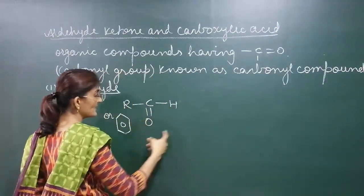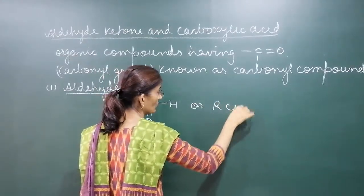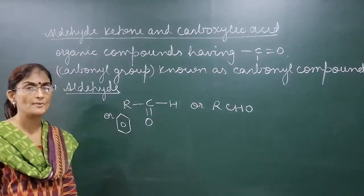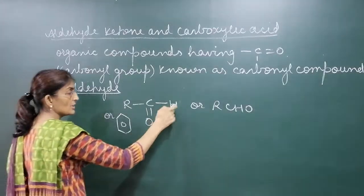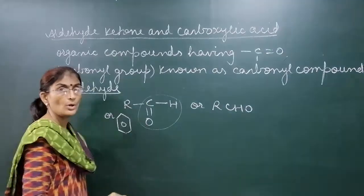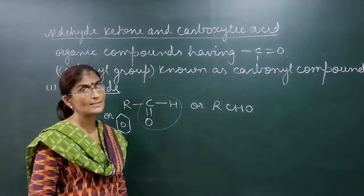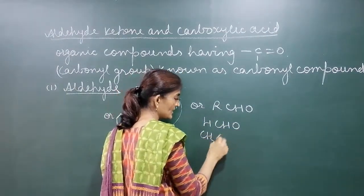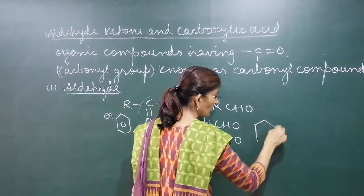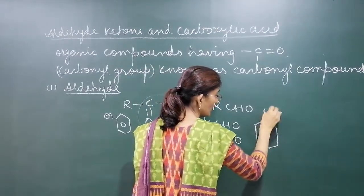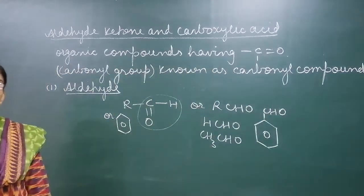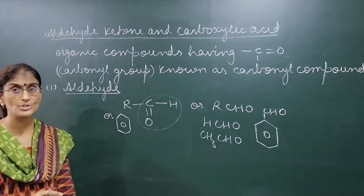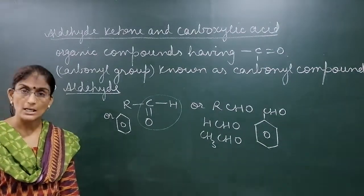The structure of an aldehyde can be condensed and written as RCHO. This is the condensed formula of an aldehyde. The functional group for aldehyde is –CHO. Examples: HCHO is an aldehyde; CH₃CHO is an aldehyde. For an aromatic example, benzaldehyde. So, to the carbonyl carbon, one valence is attached to hydrogen and the other to an alkyl or aryl group.